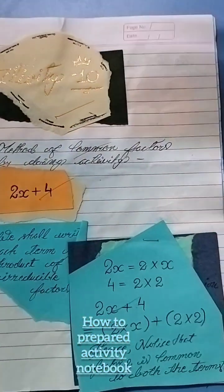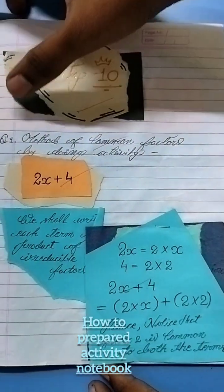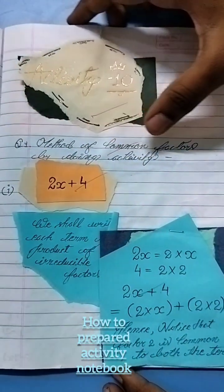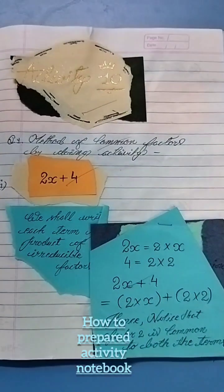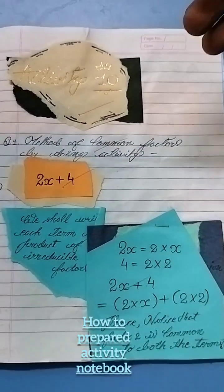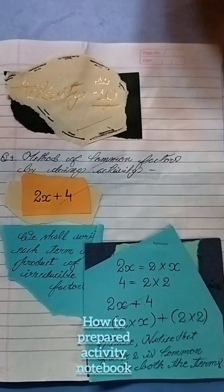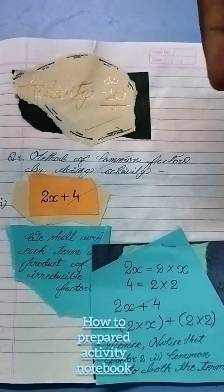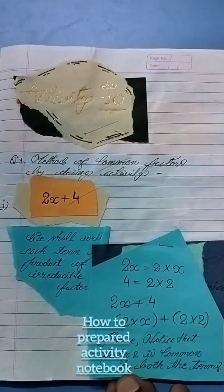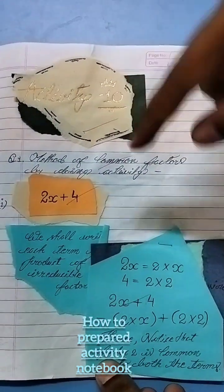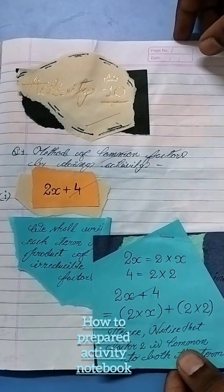The last activity is about the method of common factors. By doing this activity, we learn to find the factors of algebraic expressions — we can find the factors of any algebraic expression using this method.